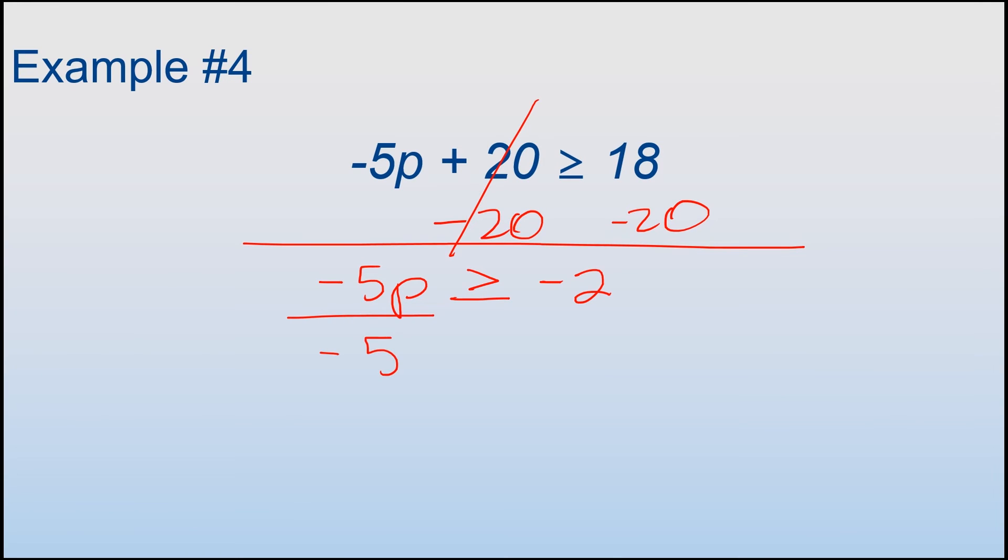Now, I'm going to divide both sides by -5. And again, this puts us in the category of needing to switch the sign direction. That's because we're dividing by a negative number. This is cancelled out. I'm left with a p over here. It's less than or equal to 2/5.